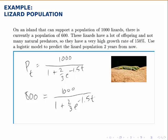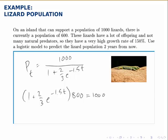First, we want to get t out of the denominator, so we'll multiply the entire denominator by both sides. It'll cancel on the right and show up on the left. Now, to solve this exponential equation, we need to start by isolating the exponential. So I'll divide both sides by 800, and then subtract 1, and then divide both sides by 2 thirds to isolate the exponential.